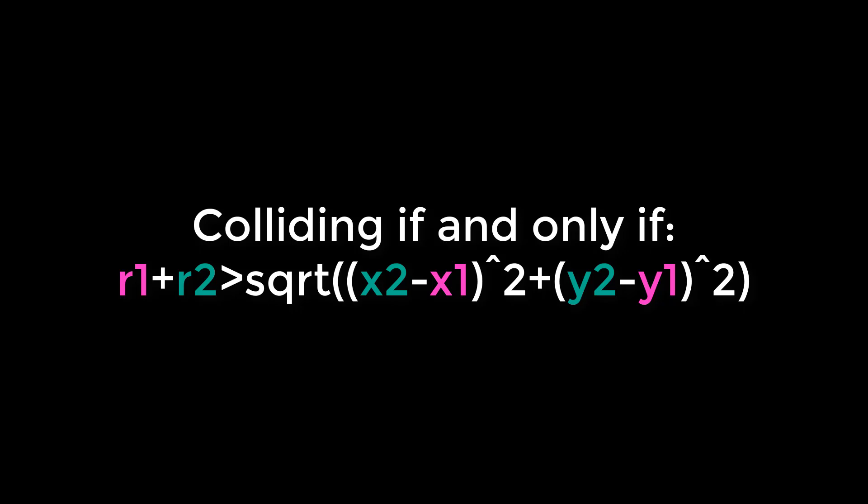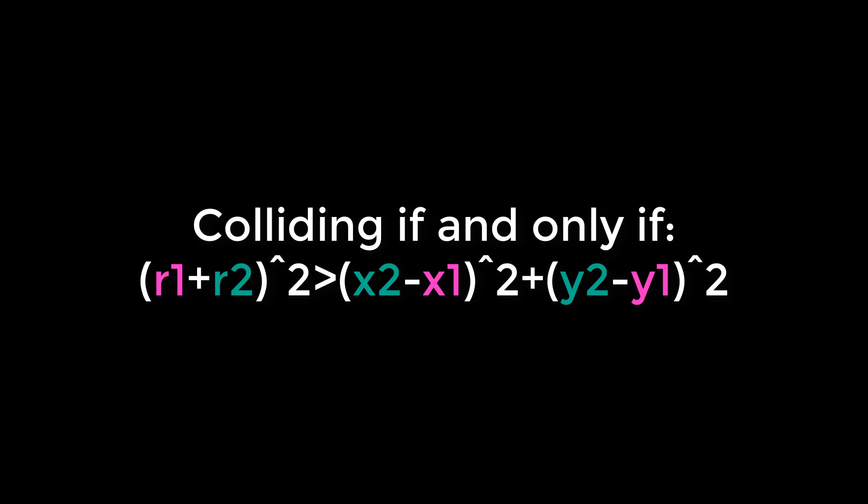But it turns out that doing a square root is computationally expensive, and so you want to cut that out if possible. And there's an easy way for us to do that. All you have to do is square both sides of this inequality and you've gotten rid of the square root. And squaring something is a lot more efficient than doing a square root. And that's important because you might be doing thousands of these per second. And when I say square, I don't mean use your math library's exponent function. Just multiply the two terms together or use a temporary variable and multiply it by itself. And that's more efficient because you don't know what's going on inside that math library.